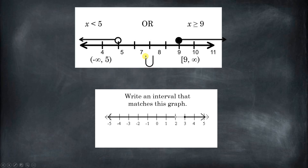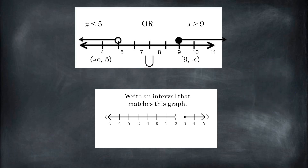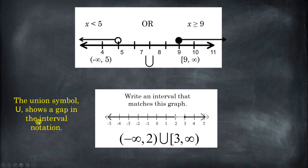Let's see another example — why don't you try this one? See if you can write this graph in interval notation. You're going to have to use the union symbol because there's a gap. Did you get from negative infinity to 2, both not included, union with 3 included to infinity? This capital U-looking union symbol shows that there's a gap, and that's what we use to show that gap in interval notation.